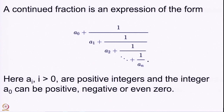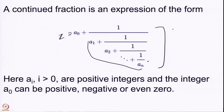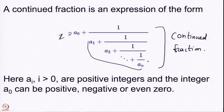Here, the integers a_i are positive integers from a_1 onwards, while a_0 is just an integer — it can be 0, positive, or even negative. We have such an expression involving only finitely many integers, and such an expression is called a Continued Fraction. It is called this because it involves fractions that are continued in some sense.